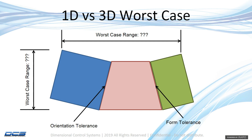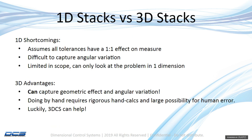However, when you do that one-dimensionally, you can't take into account the fact that if there are any orientation tolerances or form tolerances, how your assembly will react when it's tipping and rocking. As you see from this picture here, you could have a minimum that is less than your minimum stack as it folded in or out.